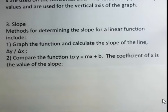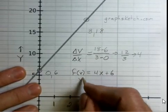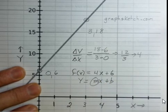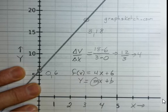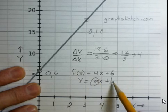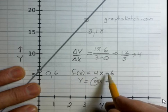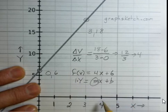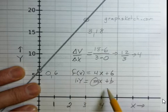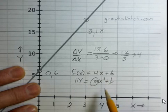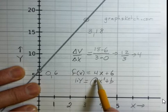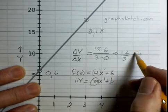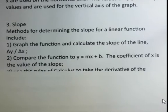Another way to find the slope for a linear function is to compare it to the standard form y equals mx plus b. Here m represents the slope and b is the y-intercept. For y equals 4x plus 6, the number in front of x to the first power is your slope. This only works for linear functions with x to the first power. Our slope value is 4, just as we found from delta y over delta x.